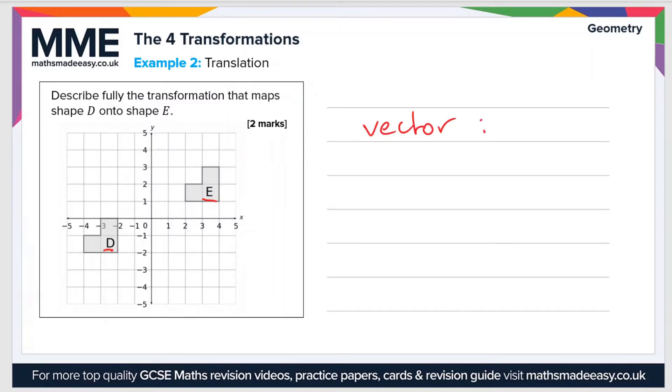Now to do that, let's pick a point. So let's take the top right corner of each shape. In order to get from D to E, we need to track how far it moves in each direction. So it moves one, two, three, four, five, six, so six to the right. That's six in the positive x direction, so the top of our vector will be six.